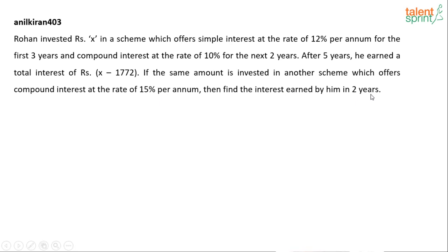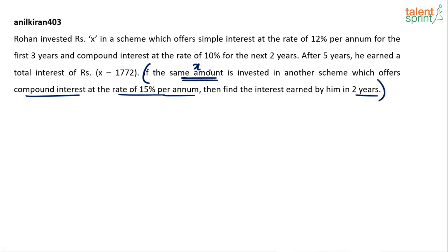The latter part of the question is very simple. The same amount here refers to x. So if x is invested in another scheme which offers compound interest at the rate of 15% per annum, what is the interest earned in two years? Basically, if you know the value of x, all you have to find is the compound interest for two years at 15% per annum.